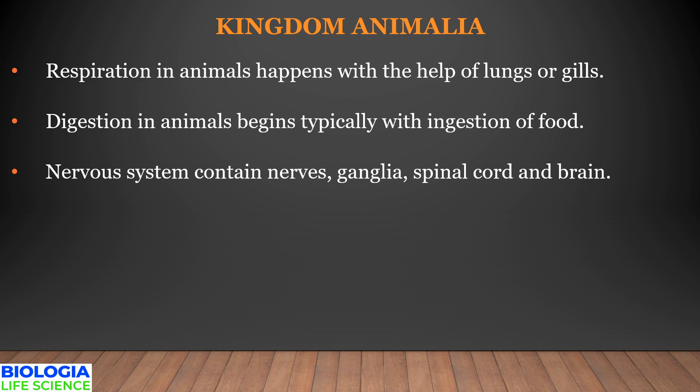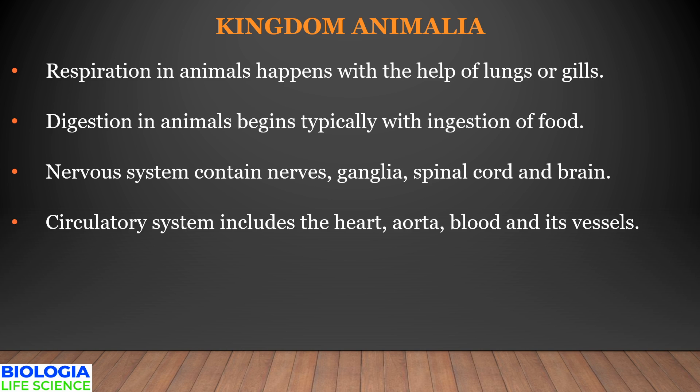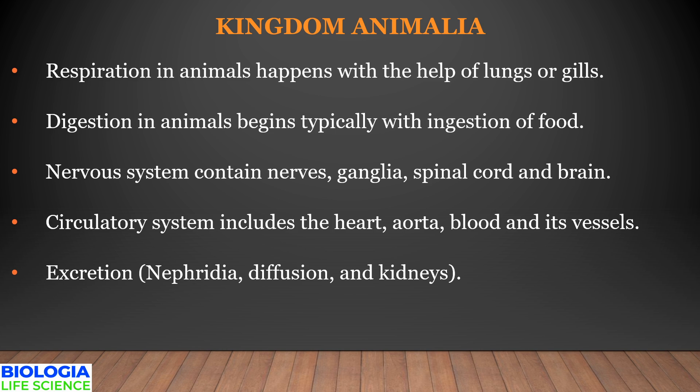The nervous system has evolved from nerves to ganglia, to spinal cord and to brain. The circulatory system includes heart, aorta, blood, and associated vessels. Excretion has evolved from mere diffusion to nephridia, and from nephridia to kidneys.